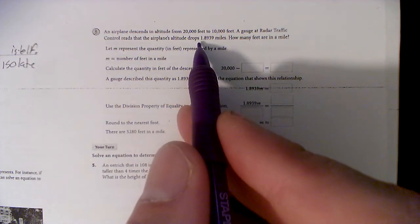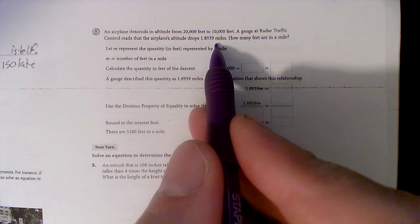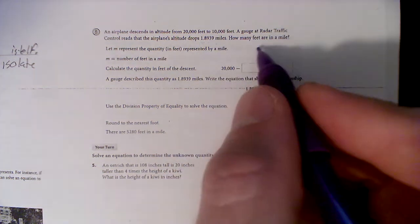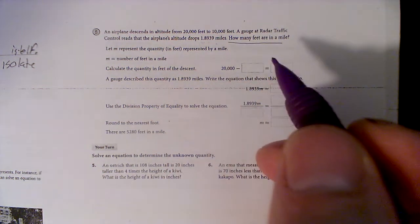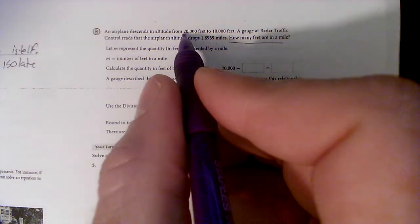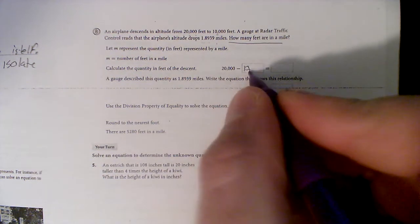An airplane descends in altitude from 20,000 to 10,000 feet. A gauge at radar traffic control reads the airplane's altitude drops 1.8939 miles. How many feet are in a mile?